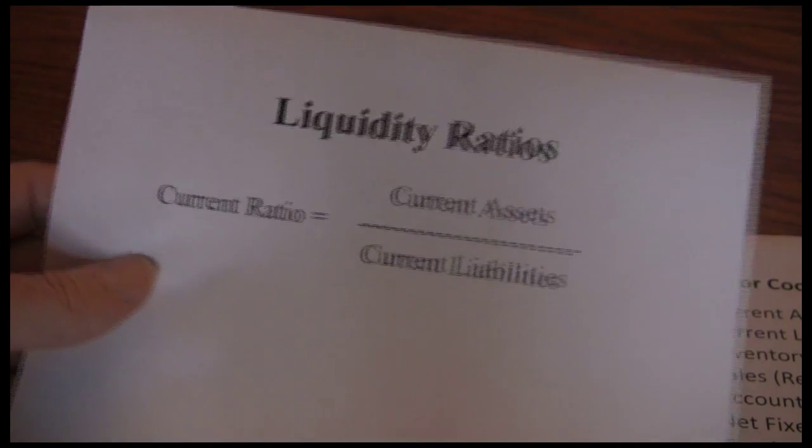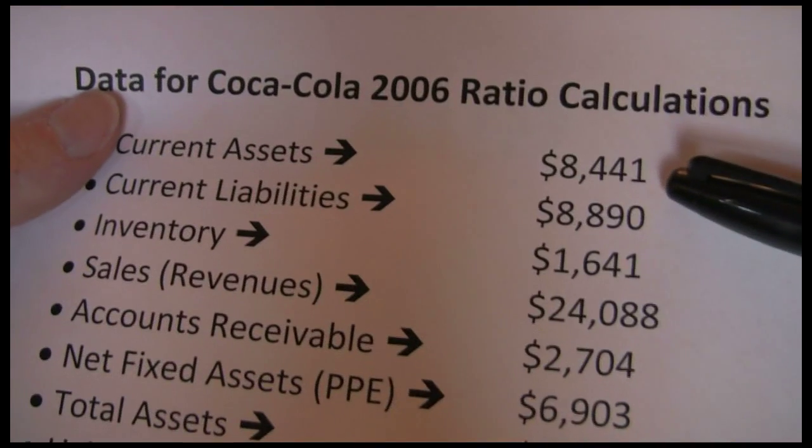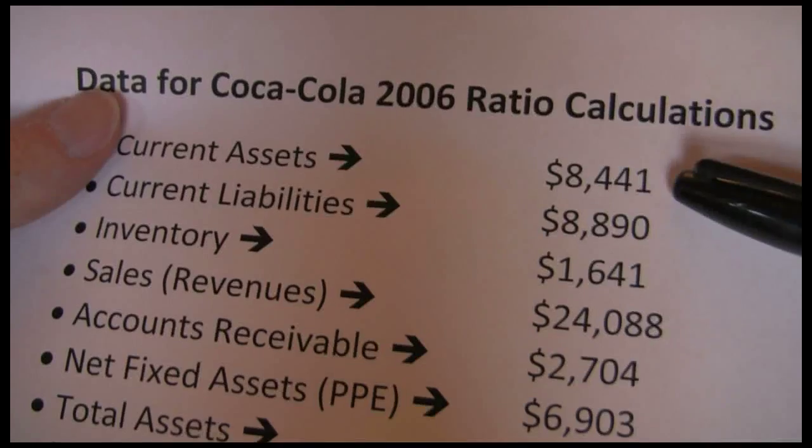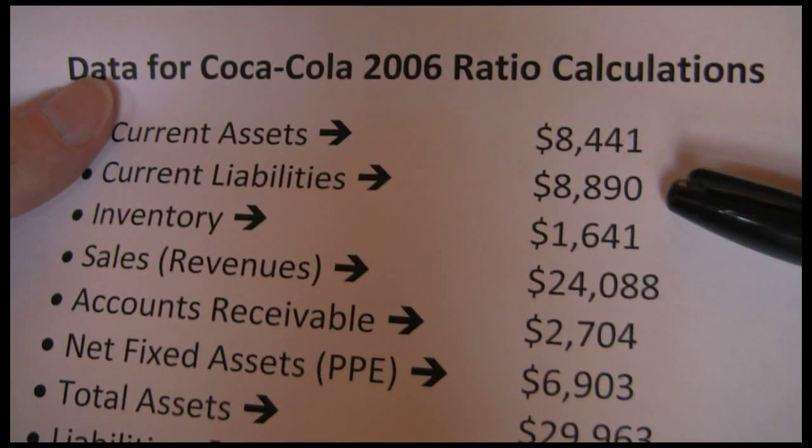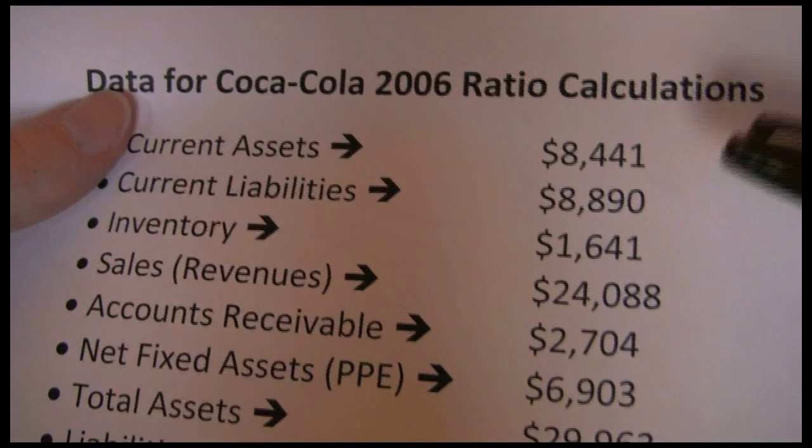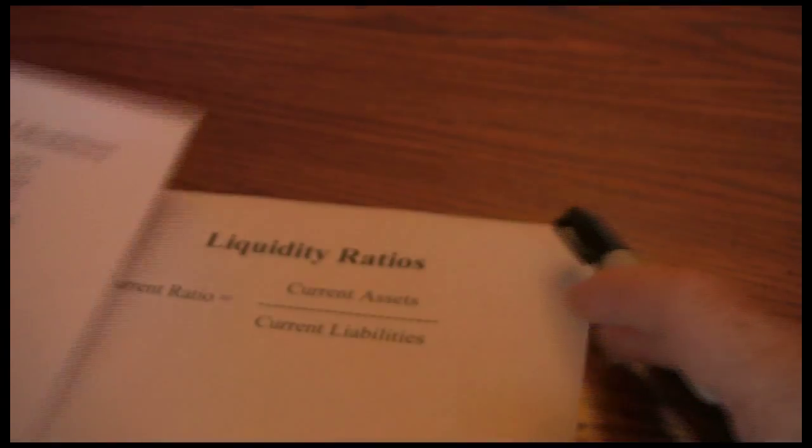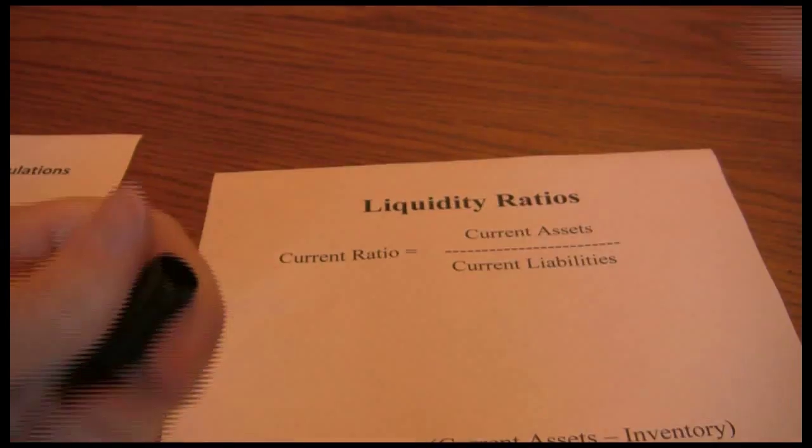We want current assets divided by current liabilities. Our current assets were $8,441. Our current liabilities were $8,890. We'll use those two numbers to get our current ratio.